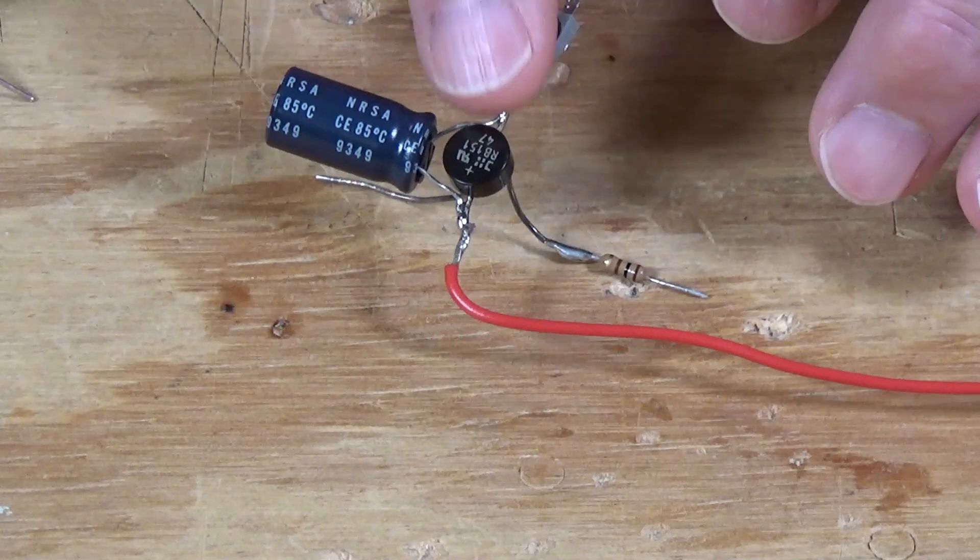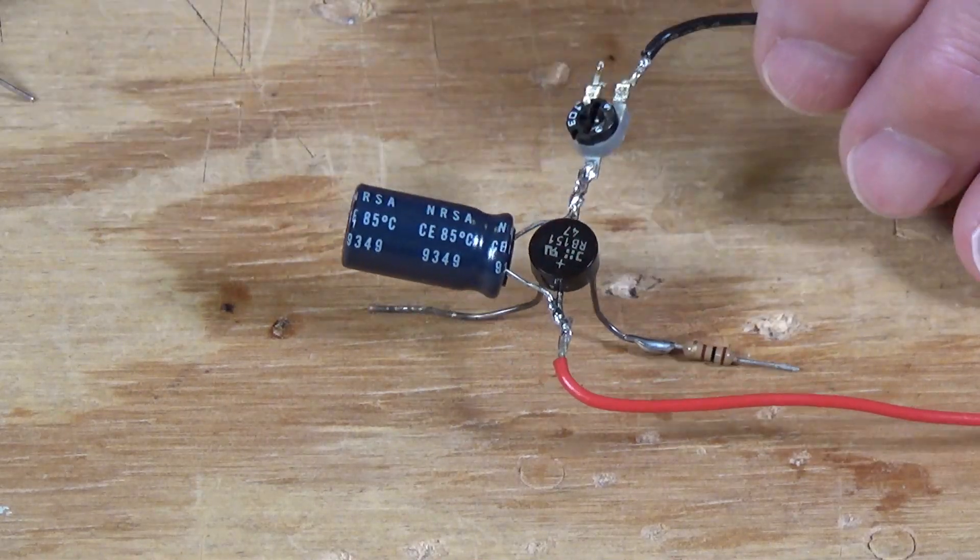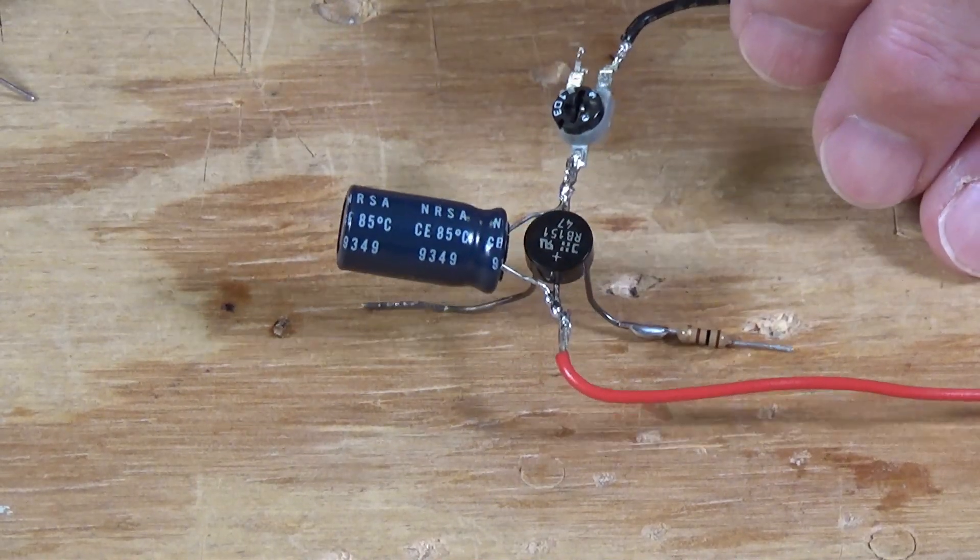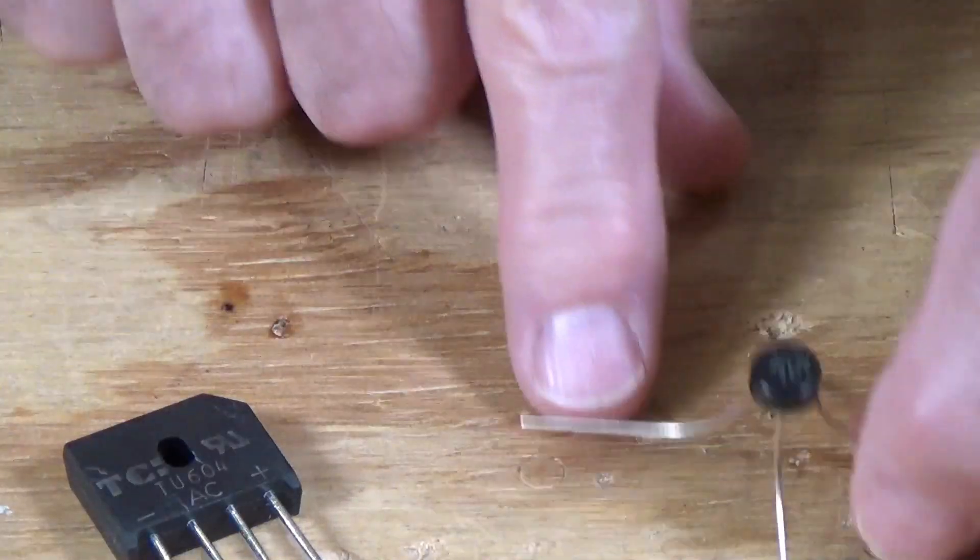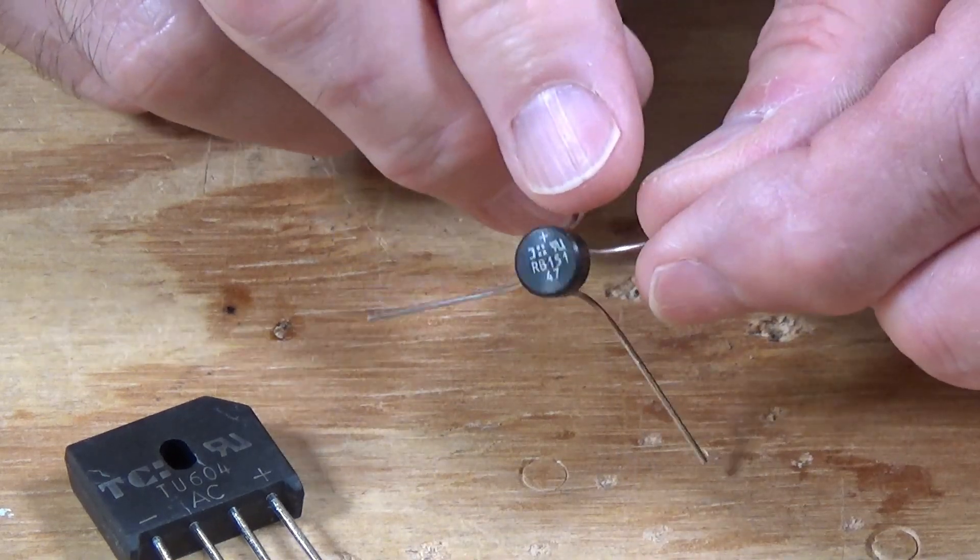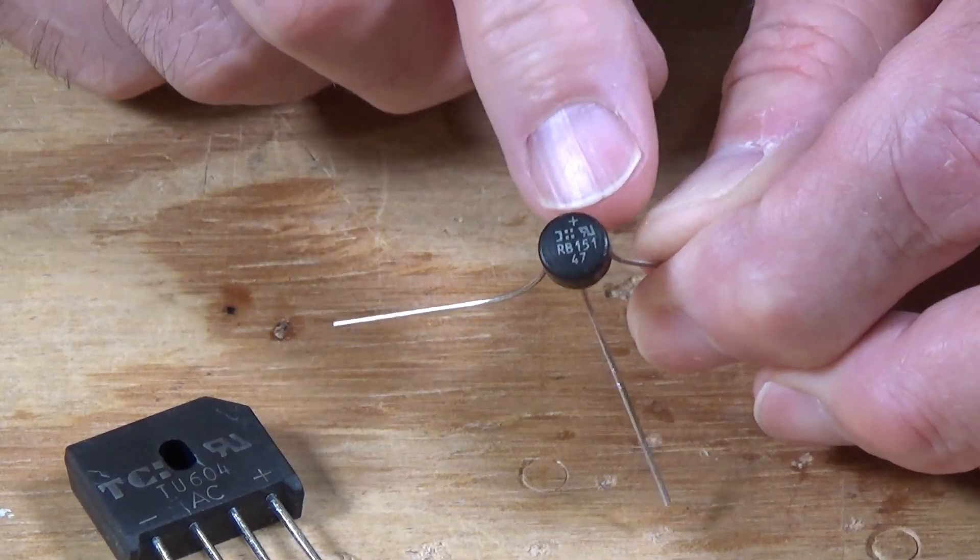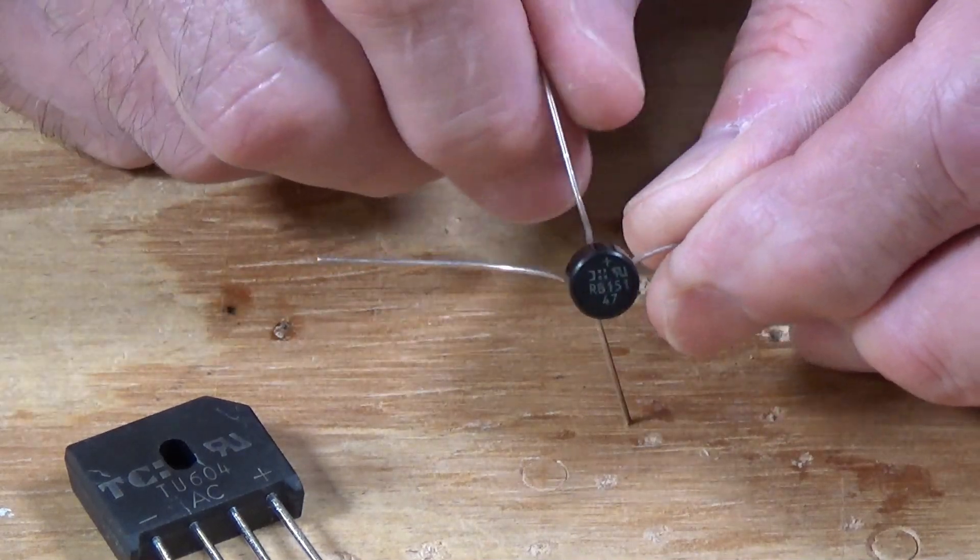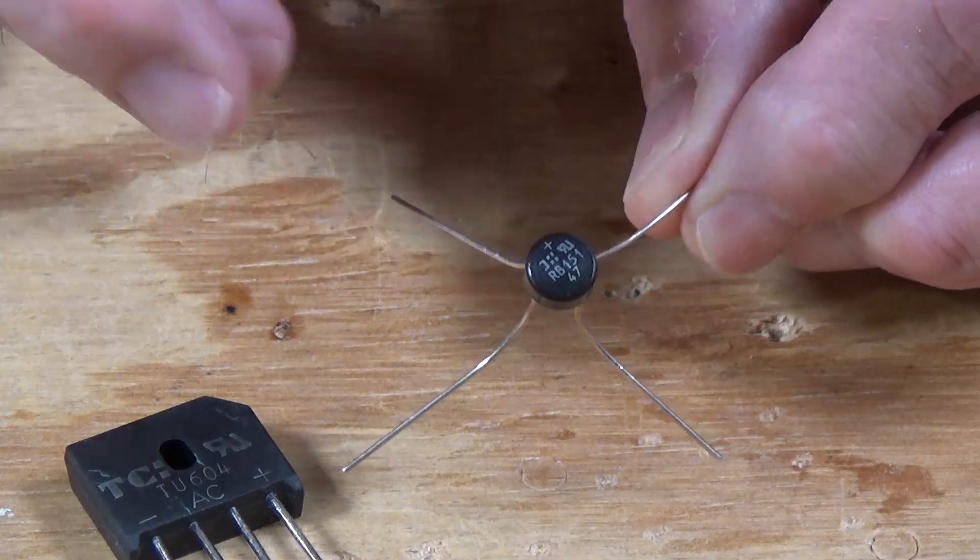But first, let me show you what all these components are. And there's only four components in this particular device. The first thing, and the most important part here, is what's called a bridge rectifier. So the bridge rectifier takes AC power and converts it to DC power, which is what you need to operate your lights inside of your passenger cars and your cabooses.